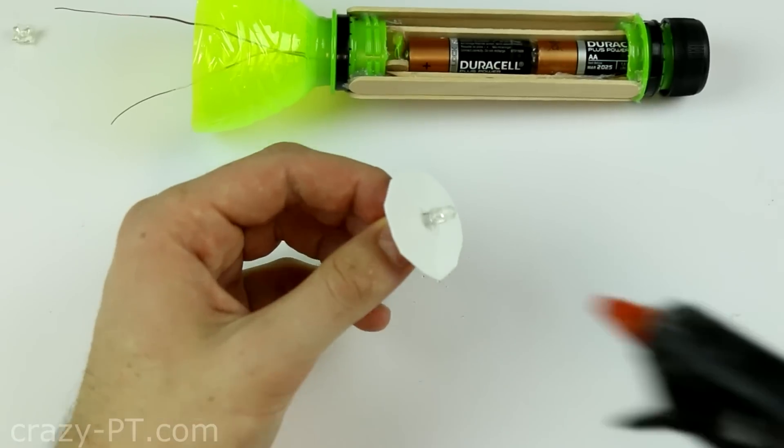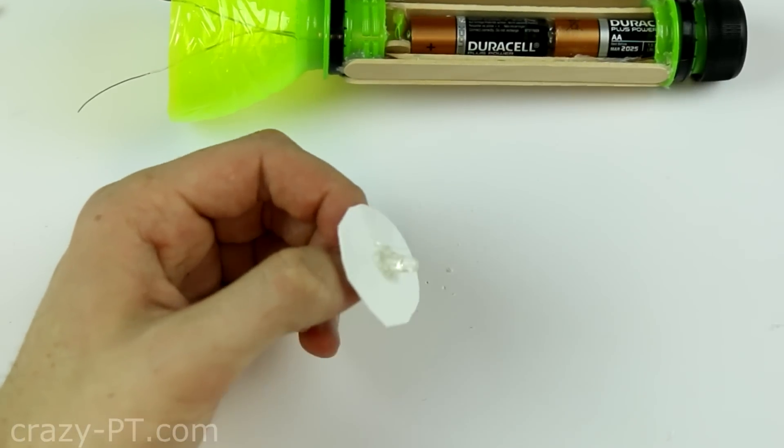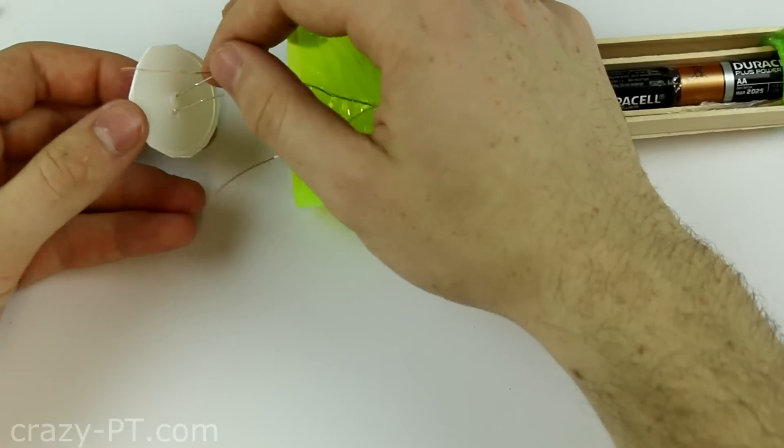And glue around to make sure that it will stay. Now tie the wires to the right polarity of the ends of the lead.